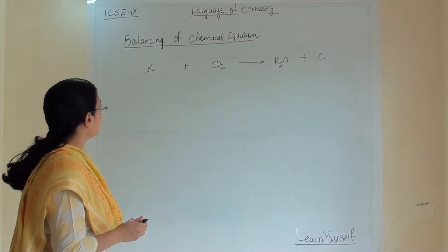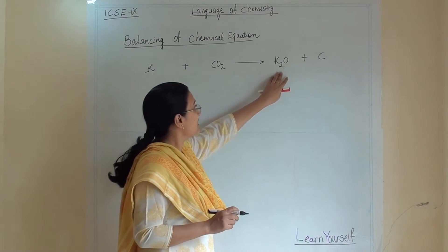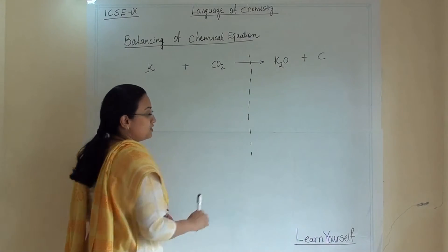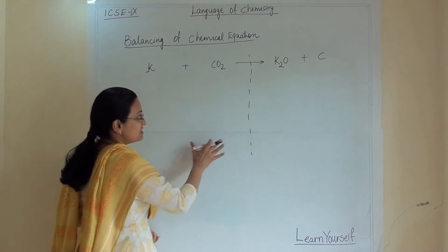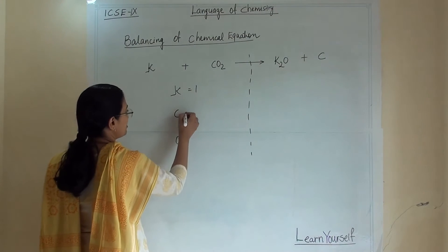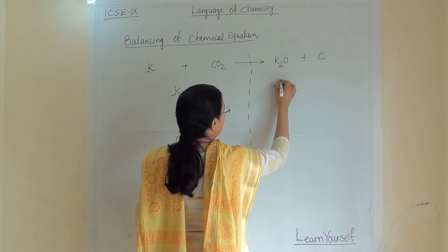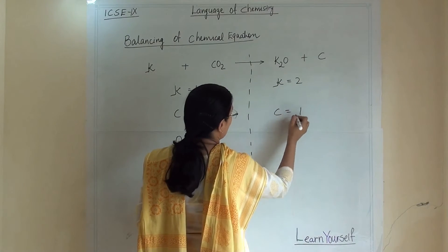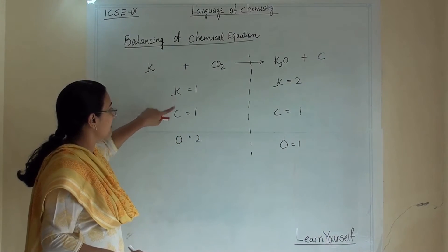Here I have mentioned one equation. Potassium when it reacts with carbon dioxide gives us potassium oxide and carbon. The first step to balance an equation is to write all the atoms from the reactant side and from the product side. So we have potassium, carbon, and oxygen. On the reactant side we have 1 potassium, 1 carbon, and 2 oxygen. On the product side we have 2 potassium, 1 carbon, and 1 oxygen. So we need to balance potassium and oxygen.